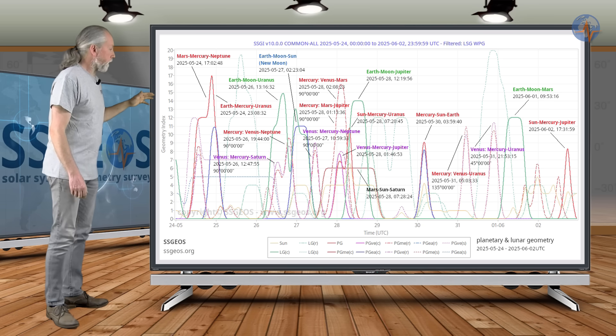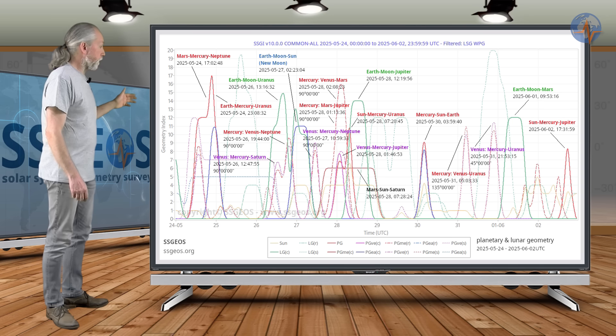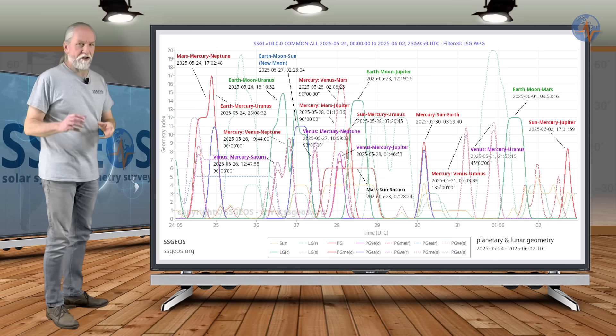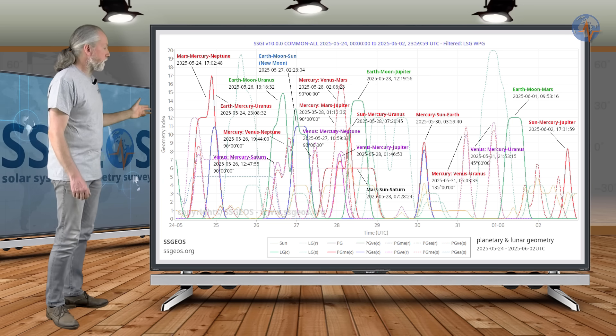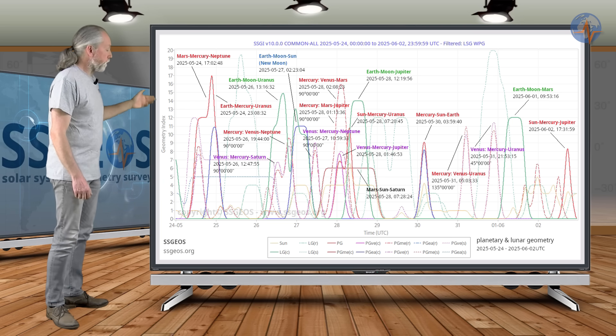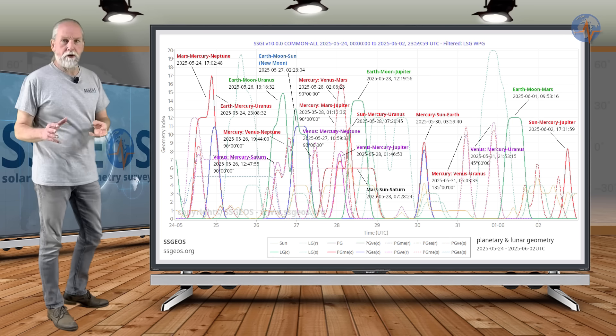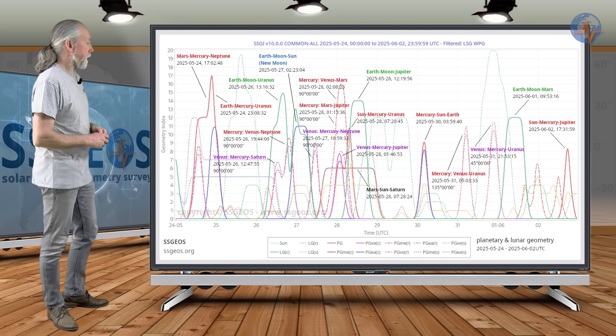We also have some geometry coming up there on the 30th. This is Mercury, Sun, Earth. Not necessarily critical. Semi-right angle geometry on the 31st and the 1st of June. And then a lunar peak, there's a lunar geometry with Mars on the 1st. And there could be some seismic response there on the 2nd of June, but probably not much at this point.